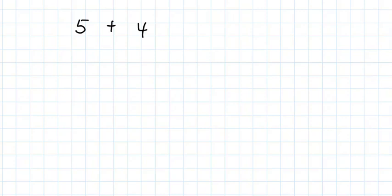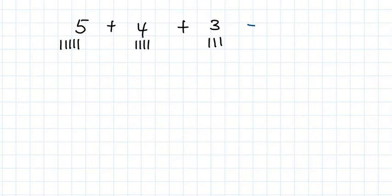If you are given five plus four plus three and you use sticks, you count out one, two, three, four, five for the first number; one, two, three, four for the second; and one, two, three for the third. Then you count all of them together: one through twelve. So the answer is twelve.